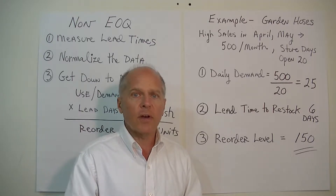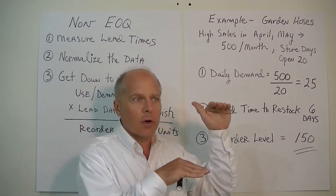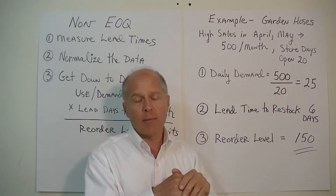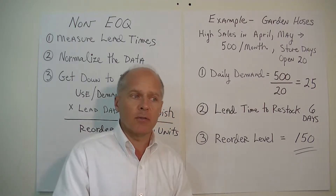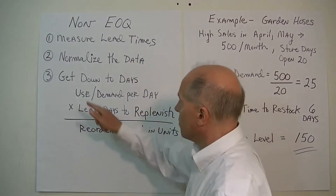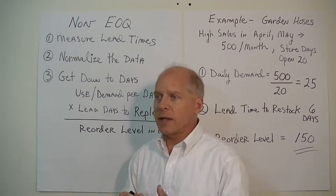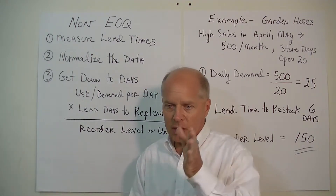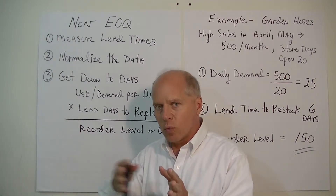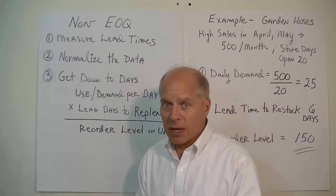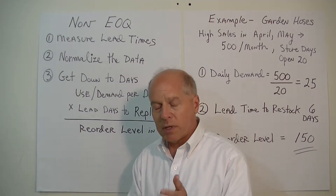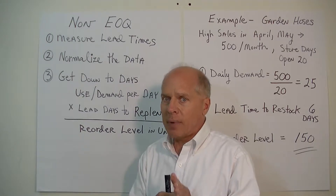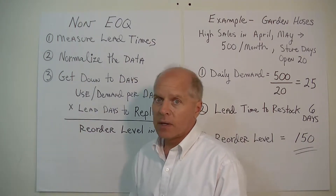If the EOQ model doesn't work, try to figure out at what level of inventory you actually need to go out and replenish and restock, so that you meet the demand for that particular item. To do that, you're going to need to know exactly how much lead time there is — the time it takes to place the order, receive the inventory, inspect it, store it, and swipe it into the inventory control system.